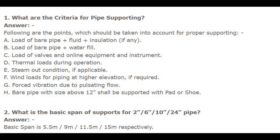Number 1. What are the criteria for pipe supporting? Answer: Following are the points which should be taken into account for proper supporting. A. Load of bare pipe plus fluid plus insulation, if any. B. Load of bare pipe plus water fill. C. Load of valves and online equipment and instruments.